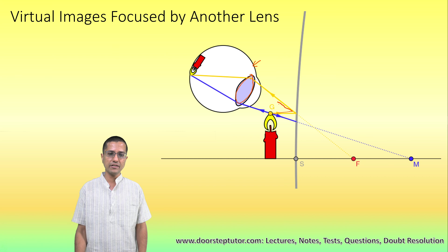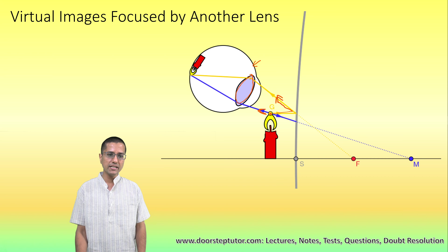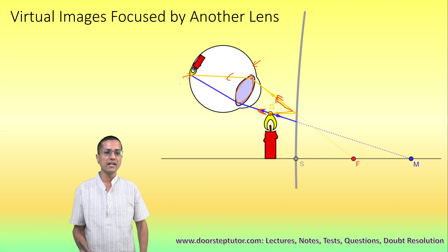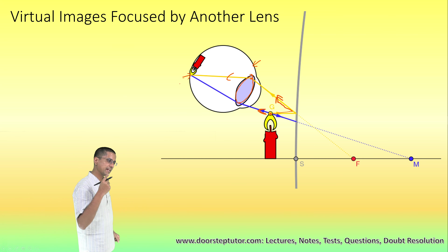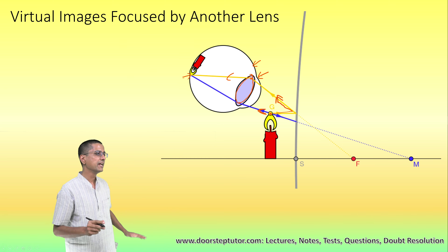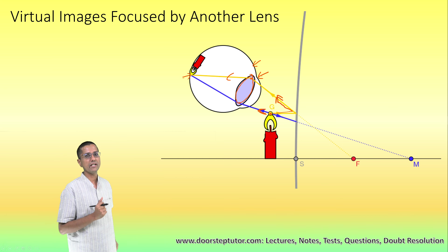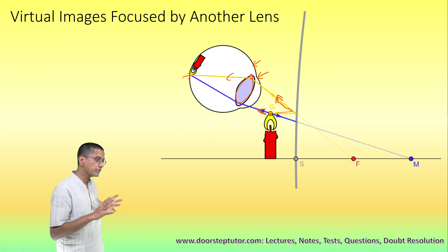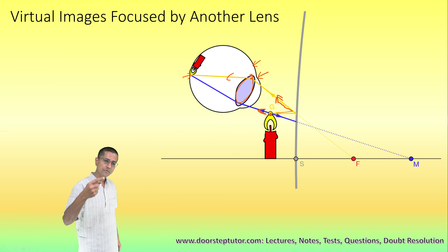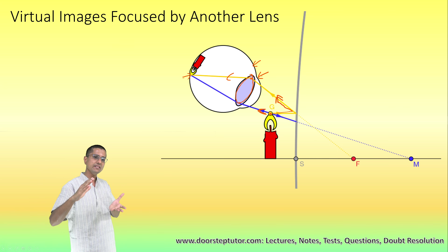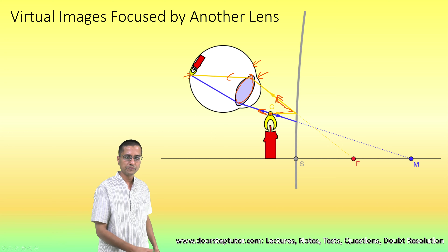That is why both real and virtual images can be observed by the eye — because the eye has a converging lens. Notice the real light rays coming from the top of a candle: they have diverged and are going in different directions, but the converging lens of the eye actually pulls those rays back together and an image is formed on the retina. So virtual images can be directly observed by the eye precisely because the eye has a converging lens.